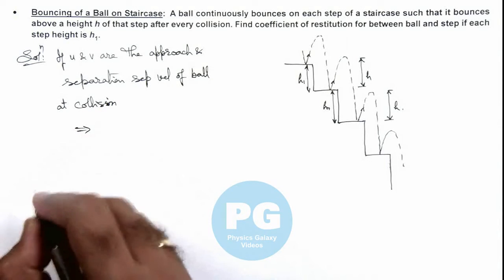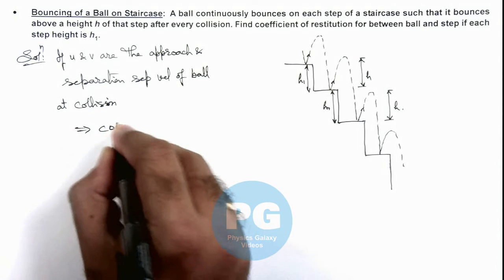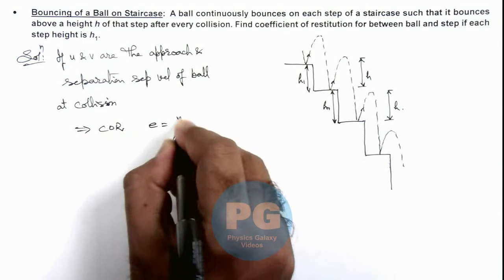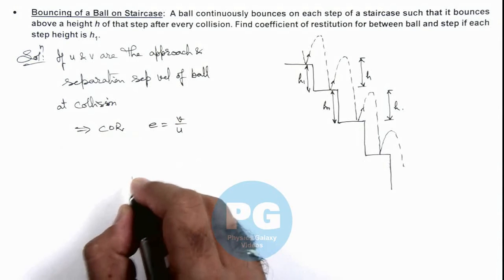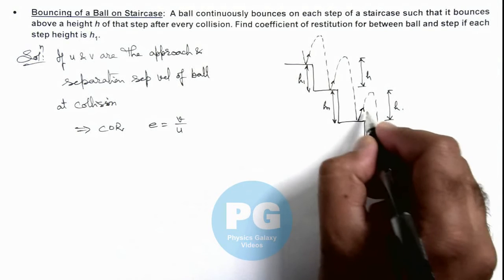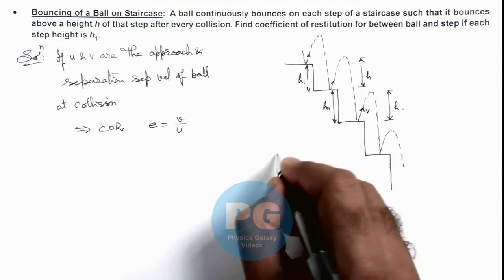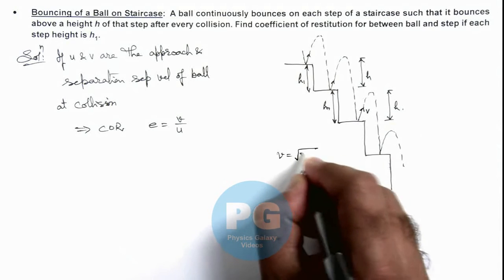This implies we can write the coefficient of restitution e is equal to v by u. And the speed with which it rebounds is v, and here we can write v is equal to √(2gh).